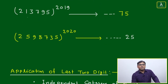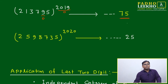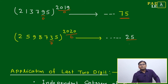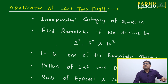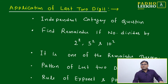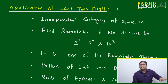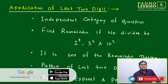For bigger numbers like 213795 to the power 2019 — the second digit of base (9) is odd and the power (2019) is also odd, so this ends with 75. But for the same base to the power 2020 — the second digit is still odd but the power (2020) is even, so it ends with 25. So for any number ending with five, last two digits are either 25 or 75 depending on both conditions.